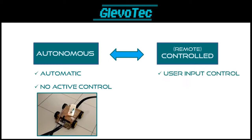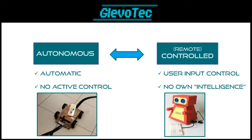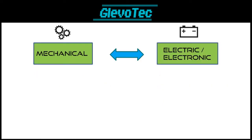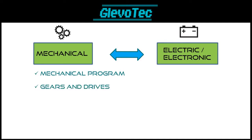This is opposed to a remote-controlled robot, which has no intelligence — it simply does what the user commands it by controlling its movements and actions. Robots can also be categorized as either mechanical or electric/electronic. Mechanical robots are designed to perform a certain program by using a complex set of gears and mechanical systems. These were the earliest form of robots, and needless to say, they were limited in functionality and incredibly complex and time-consuming to design.